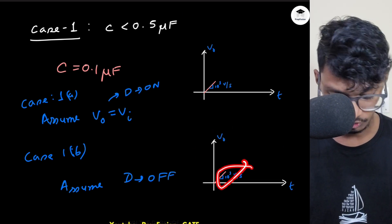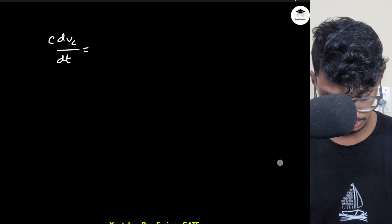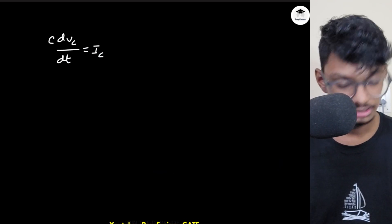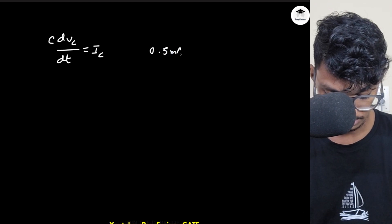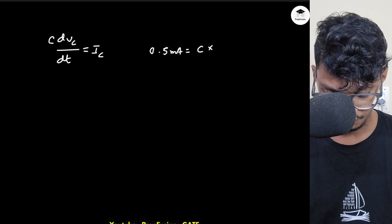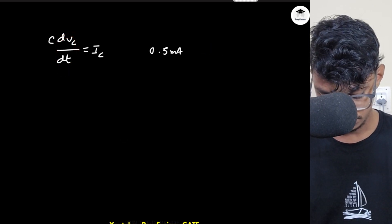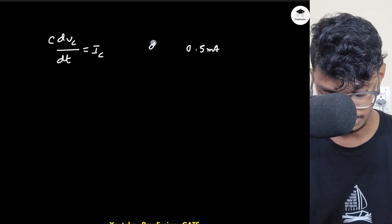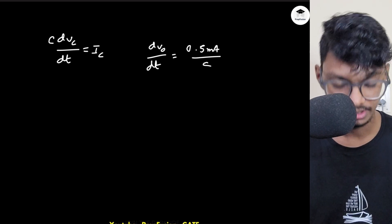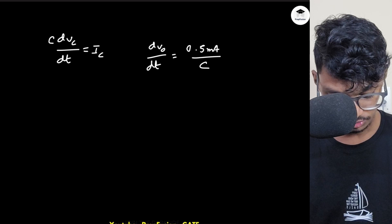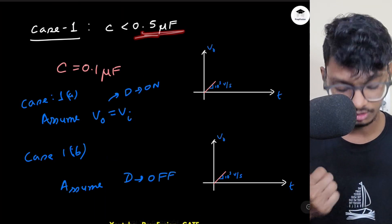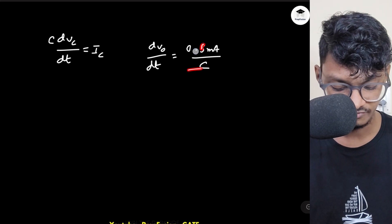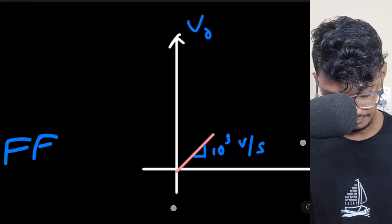The slope this time will be different. Using the basic formula C·dV_C/dt = i_C, and i_C is constant at 0.5 milliamps. So dV_O/dt = i_C / C, which gives a linear ramp function. With C = 0.1 microfarad chosen for Case 1, this slope will be 5 × 10³ volts per second.